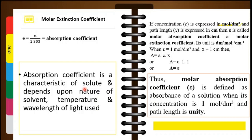Our equation is A = ε·c·x. To define molar extinction coefficient ε: if we set concentration c = 1 mol/dm³ and path length x = 1 cm, then A = ε. So the molar absorption coefficient or molar extinction coefficient is defined as the absorbance of the solution when the concentration is 1 mole per decimeter cube and the path length is unity.